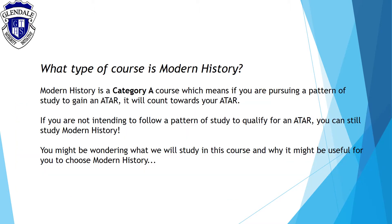Some of you might be wondering what type of course Modern History is. Modern History is a Category A course, which means if you're pursuing a pattern of study to gain an ATAR, that will count for two units towards your ATAR.